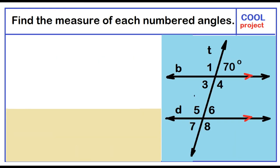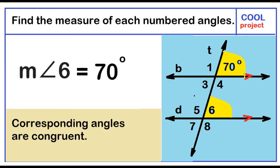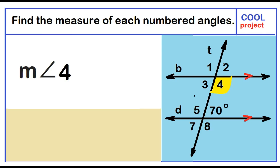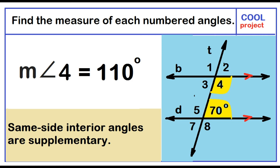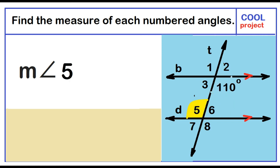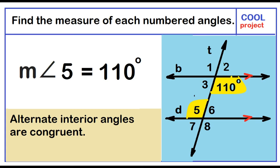Find the measure of each numbered angle. The measure of angle 6 is 70 degrees. The measure of angle 4 is 110 degrees. The measure of angle 5 is 110 degrees.